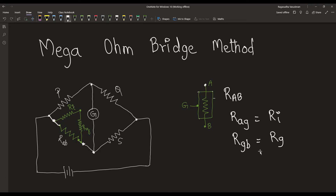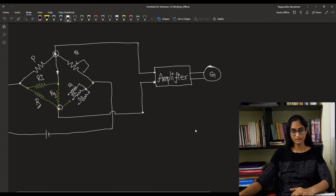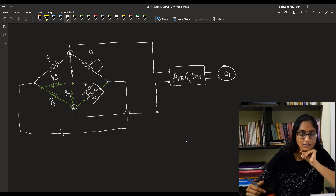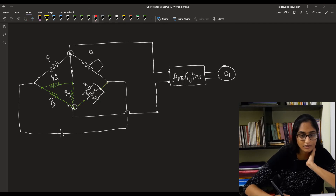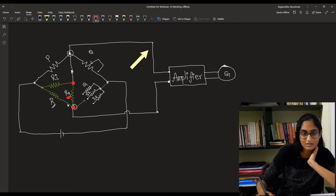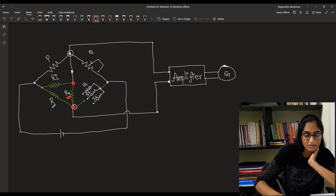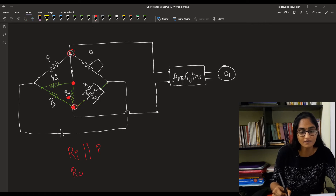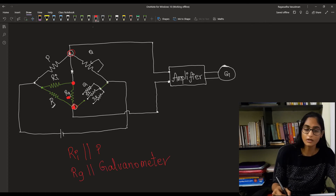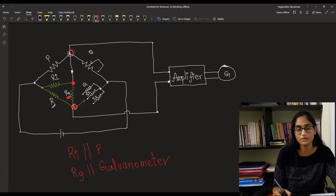To overcome this, the circuit should be slightly modified such that the galvanometer is connected in between these two terminals, and then you have this guard terminal connected in parallel with the galvanometer terminals. When you connect R_G between these two points, it means that the resistance R_G is in parallel with this galvanometer, or in parallel with these two points. You should ensure that R_LI is in parallel with P, and then the resistance R_G is in parallel with the galvanometer. Only then will you be getting a considerable amount of accuracy in this method.